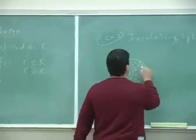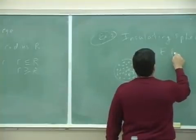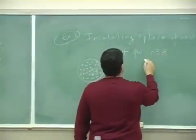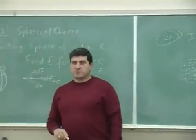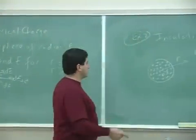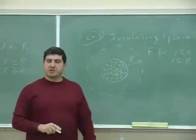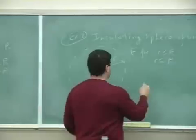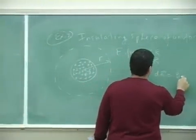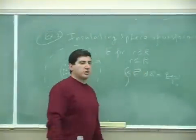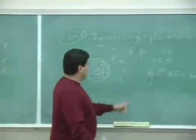We need the electric field for R greater than or equal to big R, and for R less than or equal to big R. If you apply Gauss's law to the outside, notice it's not going to make a difference whether the sphere is insulating or conducting.